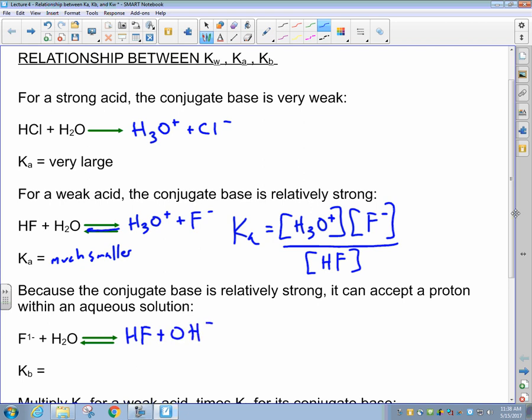So up here, the HF was behaving as an acid, and therefore that's why we have a Ka. Now we have the F- behaving as a base, and therefore we have a Kb value. This is also going to be a small value.